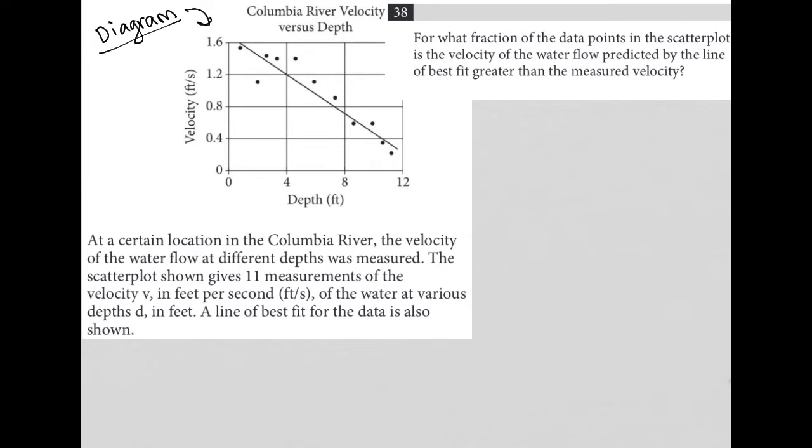We see the line of best fit, which I just extended outside of the graph. And we see that some points are above that line, some points are below that line. There are actually no points that are on the line, which is perfectly fine. Our x-axis is depth, our y-axis is velocity, and our title here says Columbia River Velocity versus Depth.